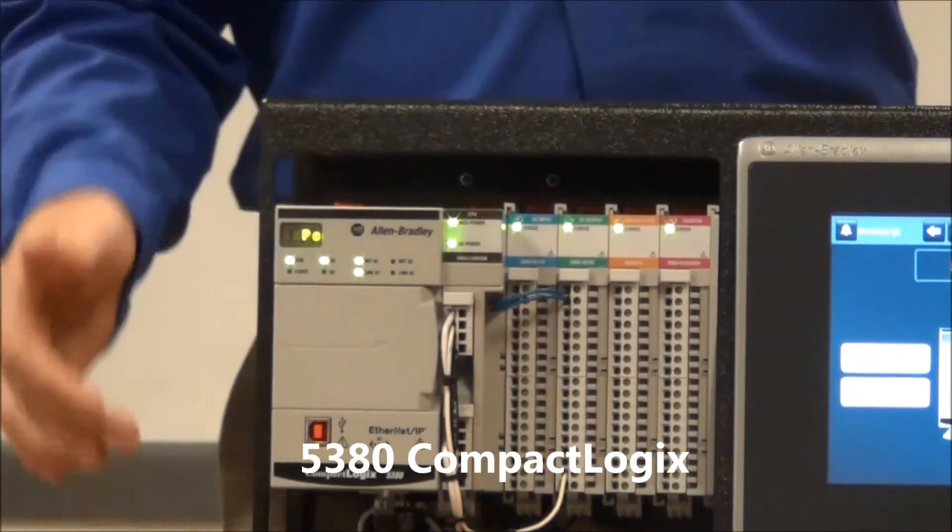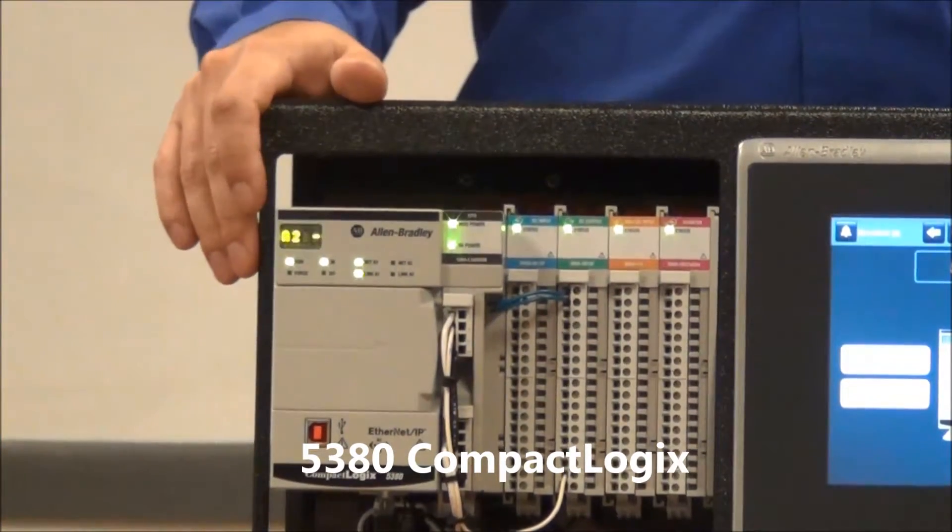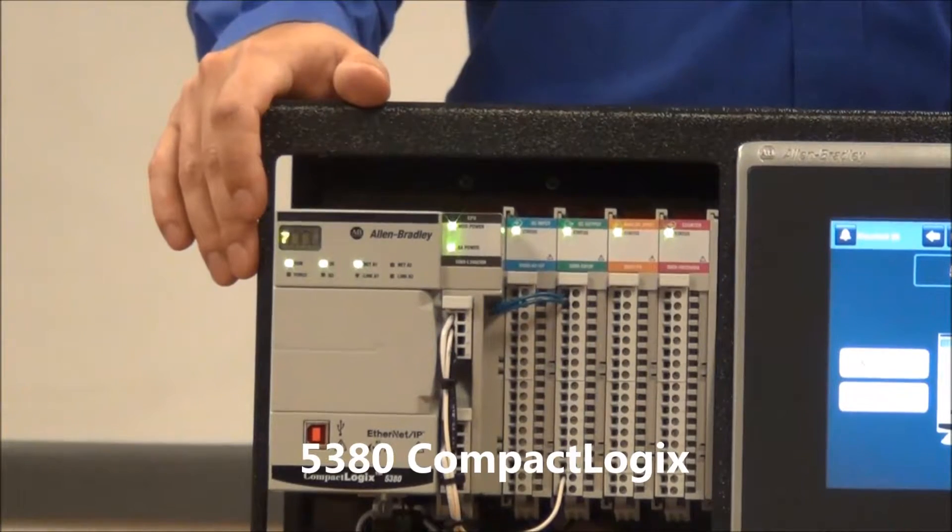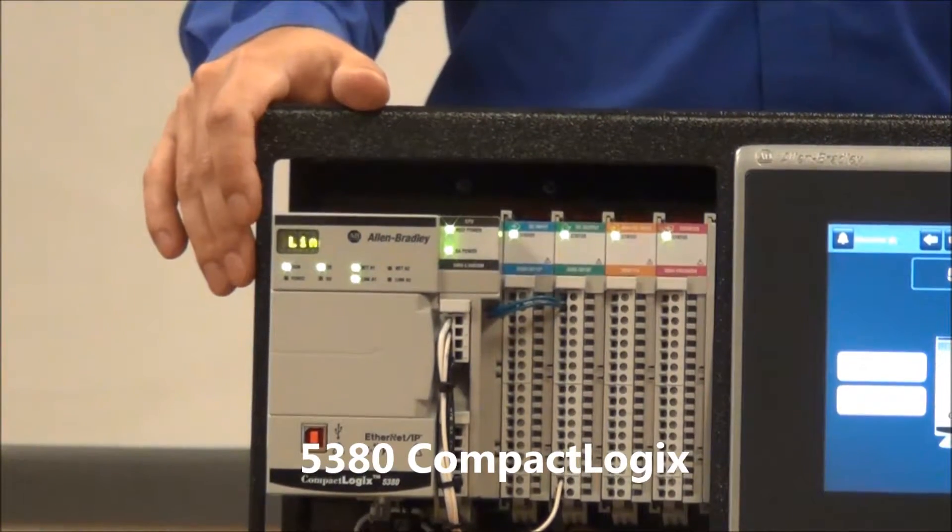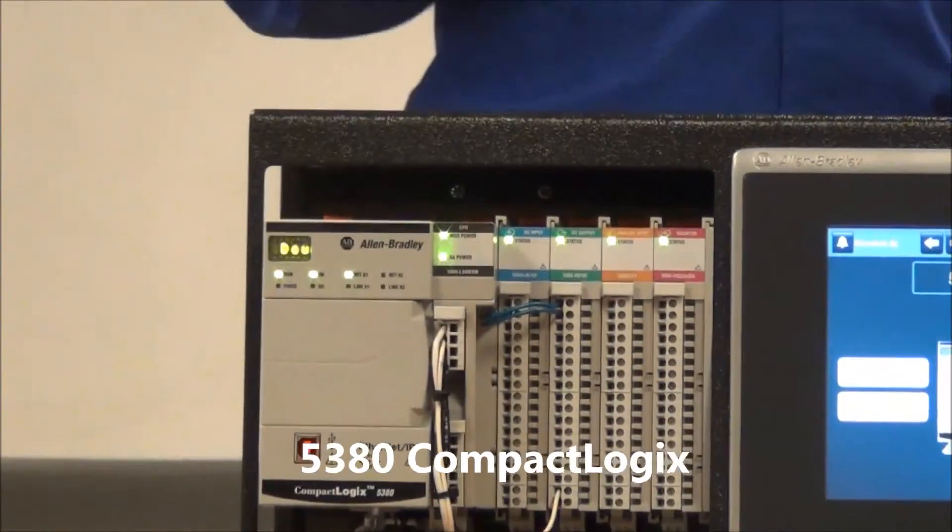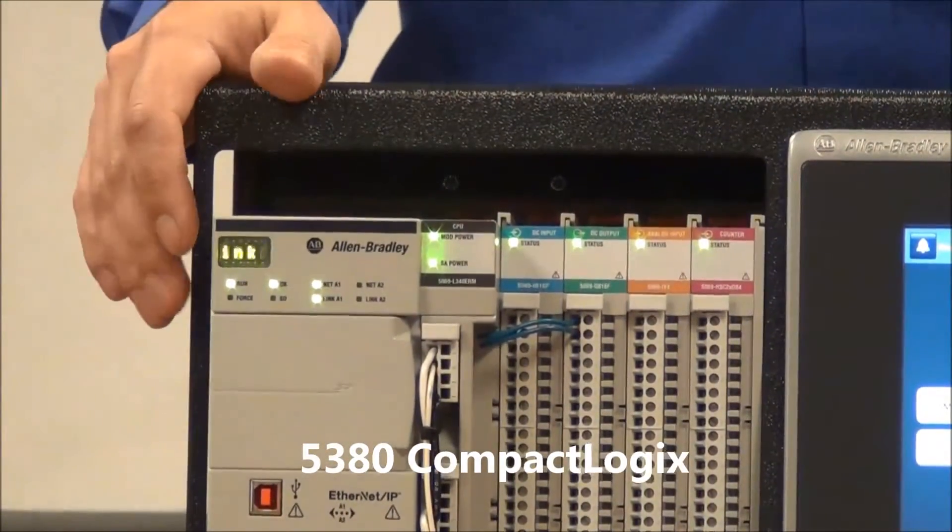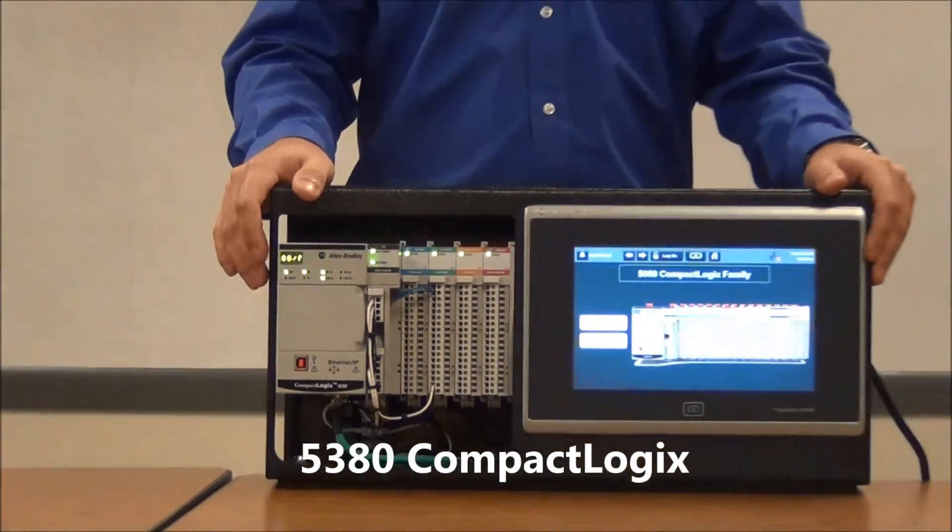On the bottom, you'll notice it has dual Ethernet ports. They are now gigabit Ethernet ports, and the new features allow them to be set to separate IP addresses. So they can not only do the traditional linear and device-level ring topologies, but they can actually be put on separate networks.